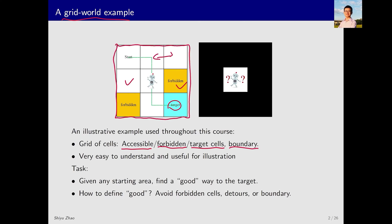The robot can move left, right, up and down between cells, but cannot move diagonally. Why do we consider such an example? You will find that it is easy to understand and useful for illustration. The task here is to find a good path from the initial location to the target location.